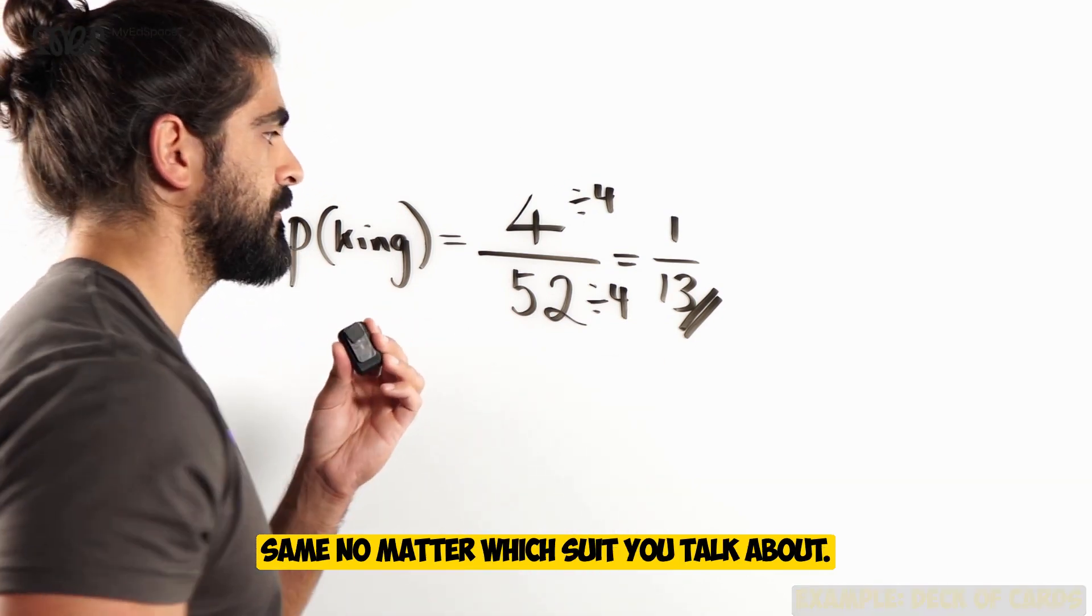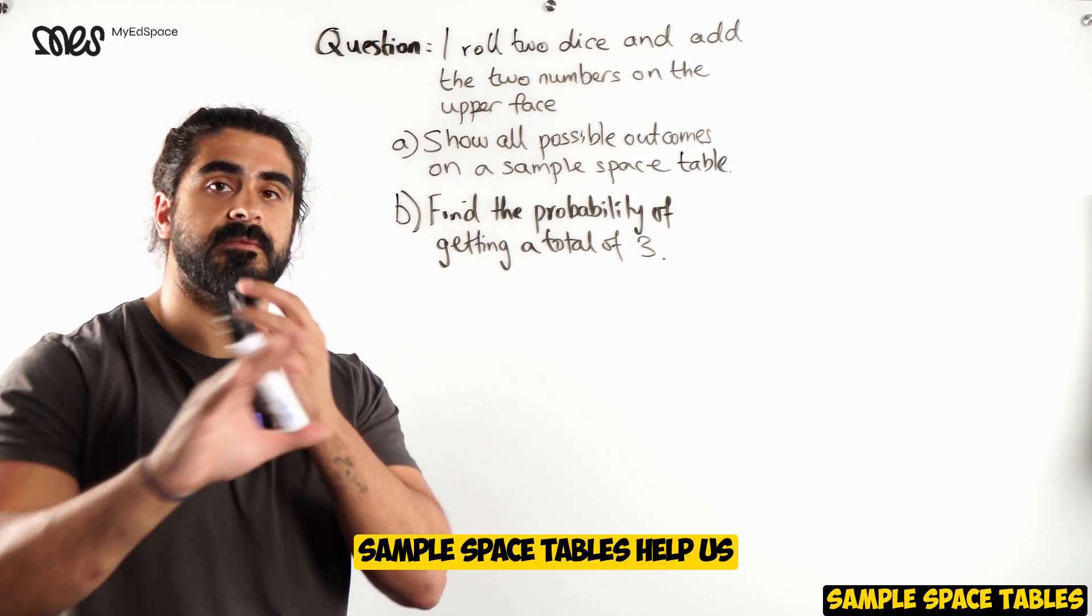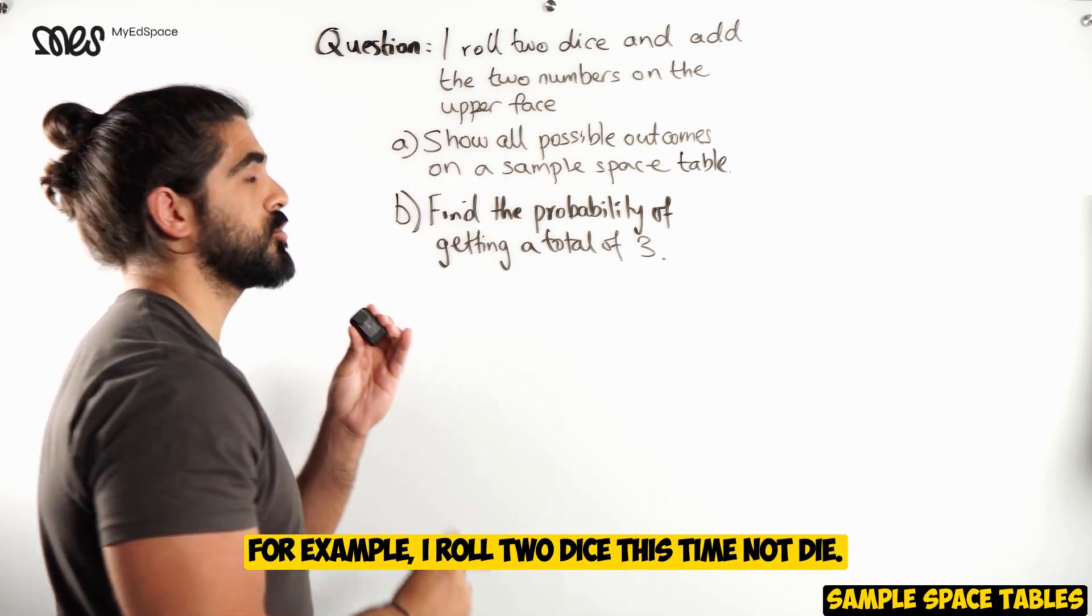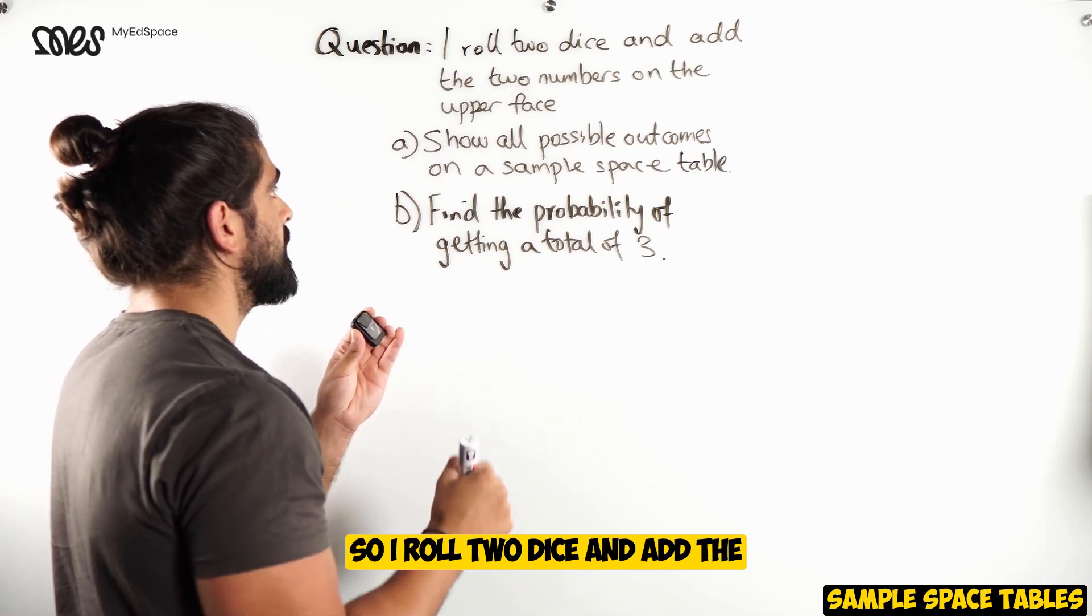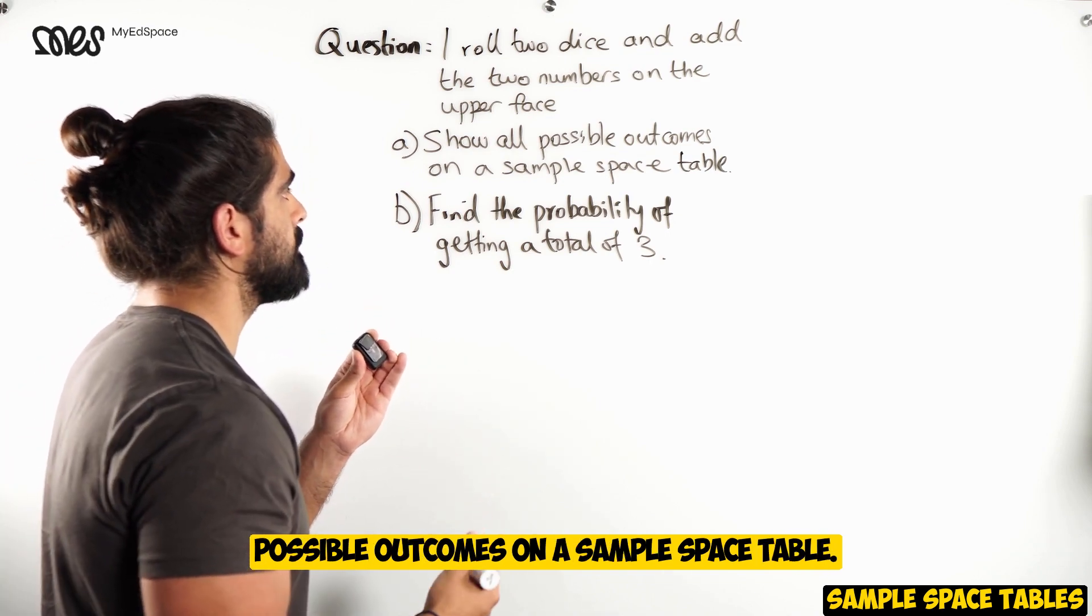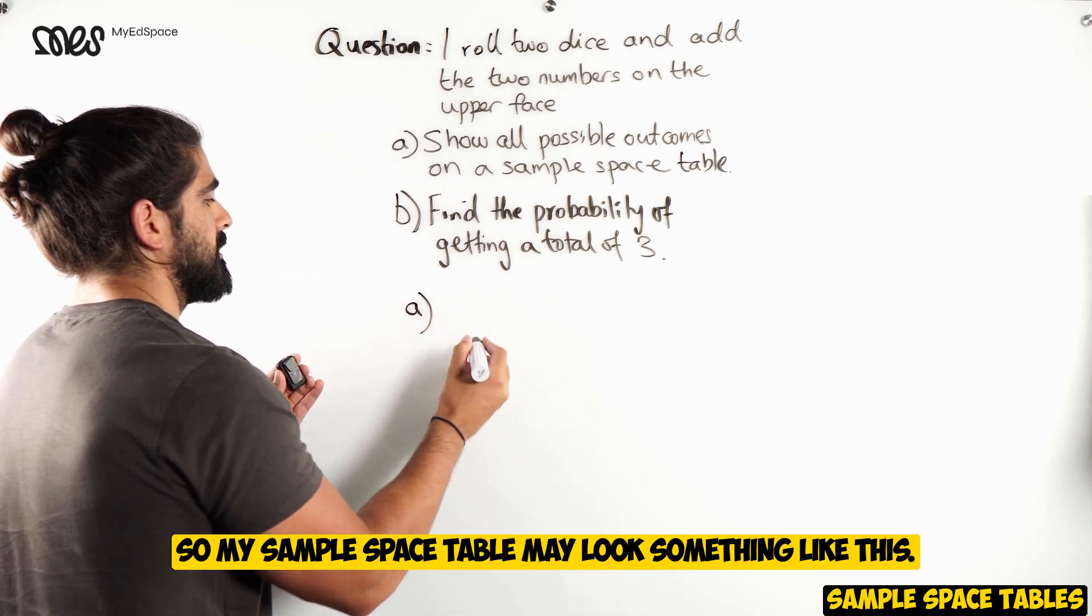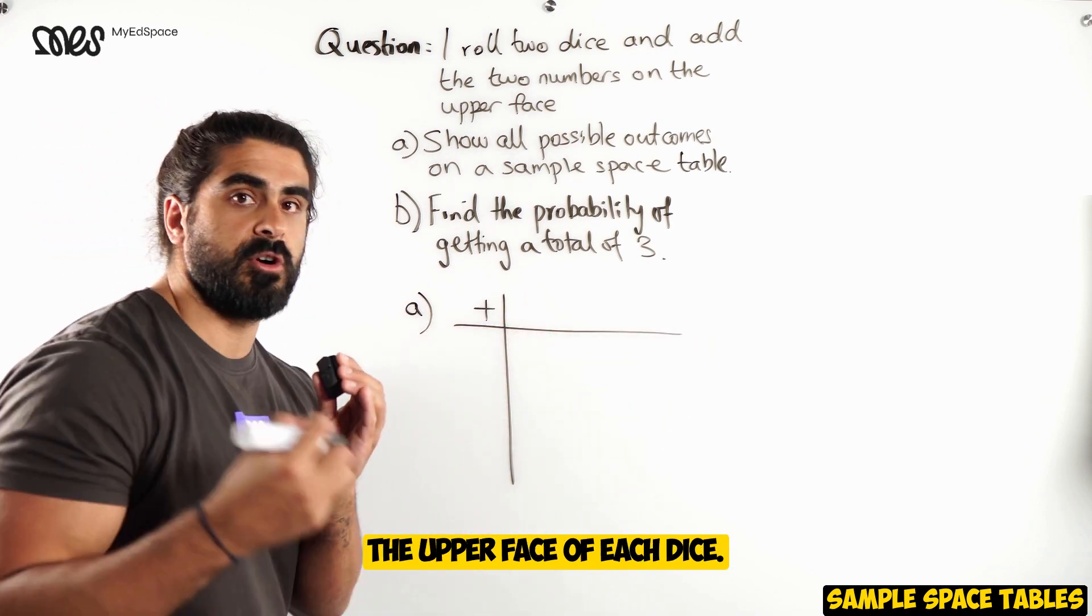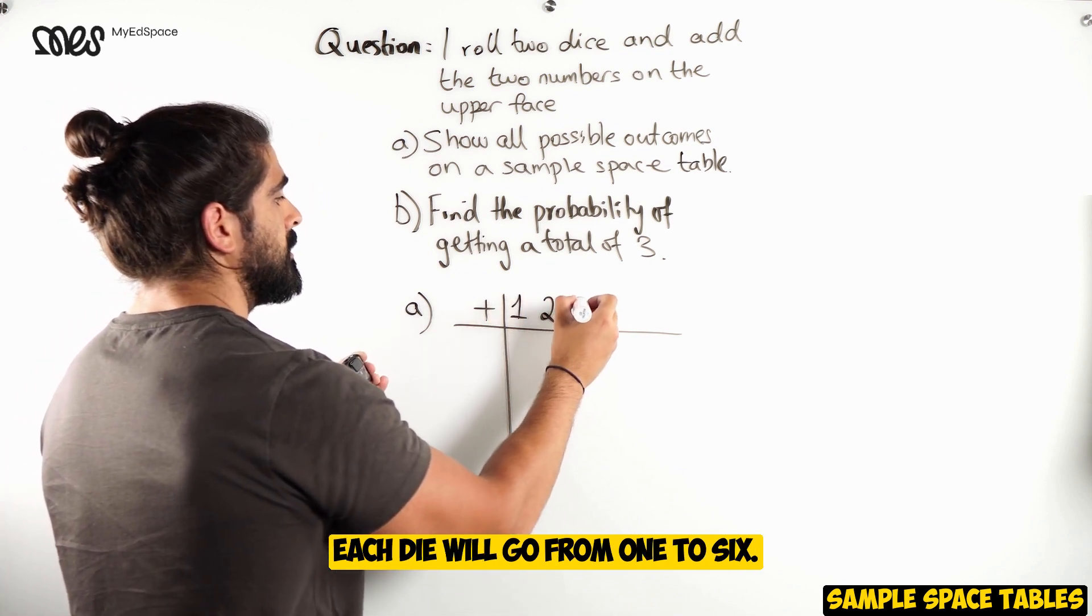Now, let's take a look at sample space tables. Sample space tables help us visualize all possible outcomes. For example, I roll two dice this time, not die. So, I roll two dice and add the two numbers on the upper face. Show all possible outcomes on a sample space table. So, my sample space table may look something like this. I'm adding the two numbers on the upper face of each dice. Each die will go from 1 to 6.